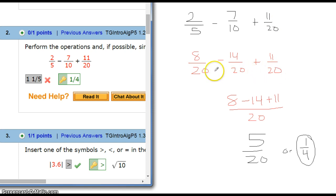Once the fractions have the same denominator, all you're doing is adding and subtracting the tops. So 8 minus 14 plus 11 comes out to 5. So 5 out of 20 is your answer, which you'll want to reduce to simplest form. Divide top and bottom by 5, you reduce it down to 1/4.